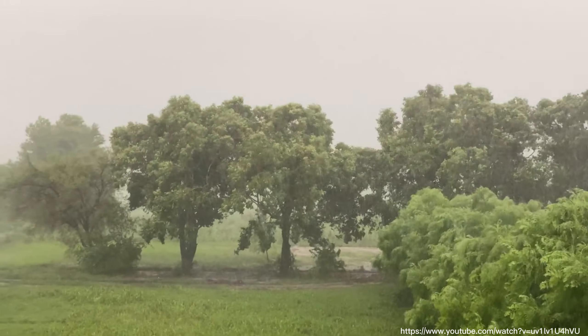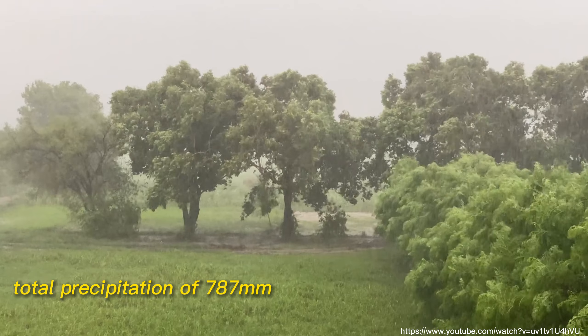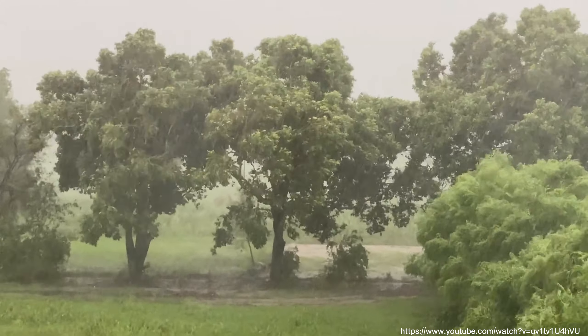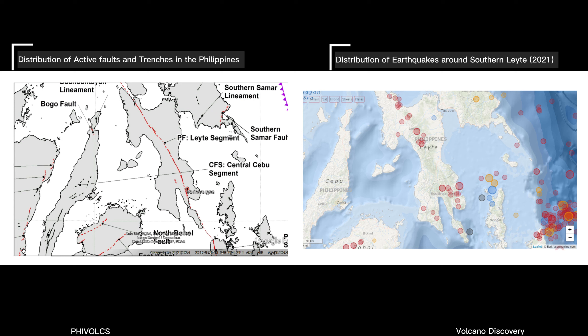Heavy rainfall was recorded for two weeks with a total precipitation of 787 mm before the disaster happened. The location and setting of the area also prompted the landslide to happen. Apparently, Ginzaugun was located near the Philippine fault zone, in which many small or medium-scale earthquakes have already occurred, lessening the compactness of the soil in the area.